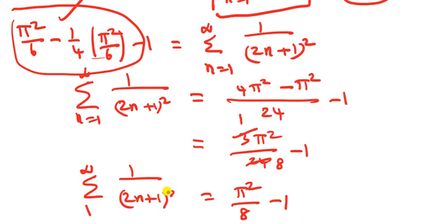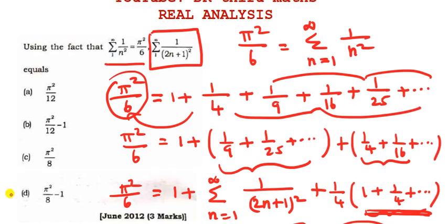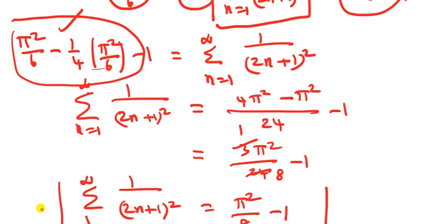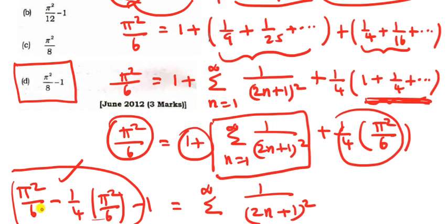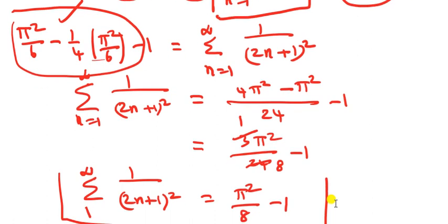Summation of 1 divided by (2n plus 1) square equals pi square divided by 8 minus 1. That is the answer: pi square minus 8, or pi square divided by 8 minus 1. Option D is the answer. Thank you. This is an easy exam question. Nice practice, thank you.